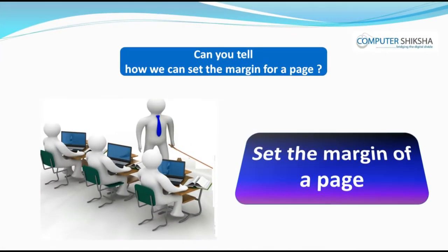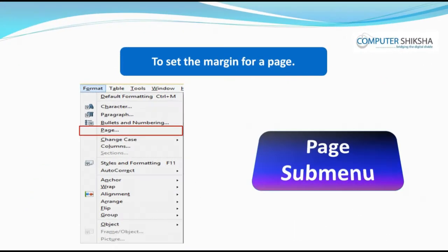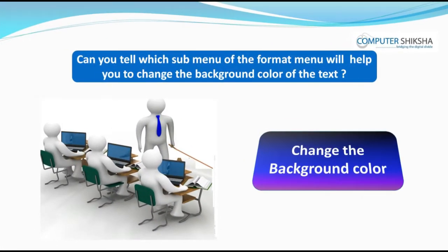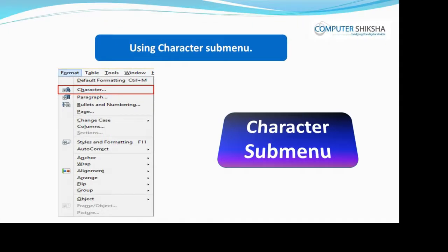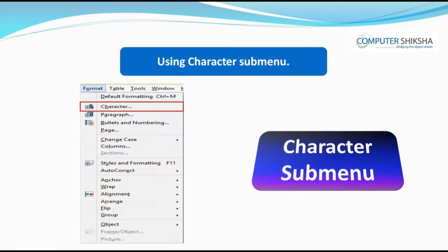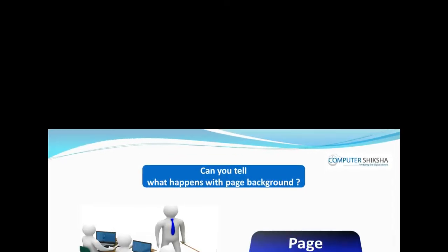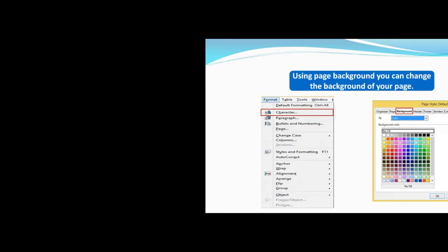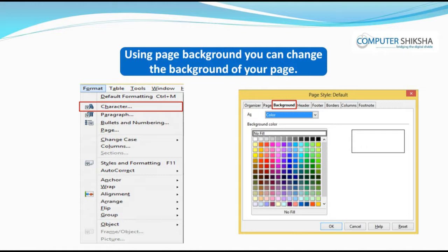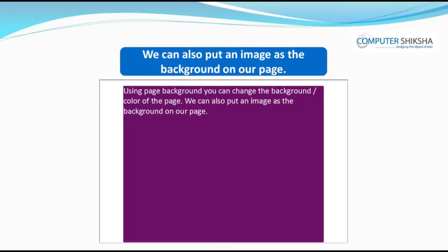Can you tell how we can set the margin for a page? If you want to set the margin for a page, then you will be using the page submenu of the format menu. This will help you to leave a margin on your page. Can you tell which submenu of the format menu will help you to change the background color of the text? If you want to change the background color of your text, then you can do this with the help of the character submenu's background option.